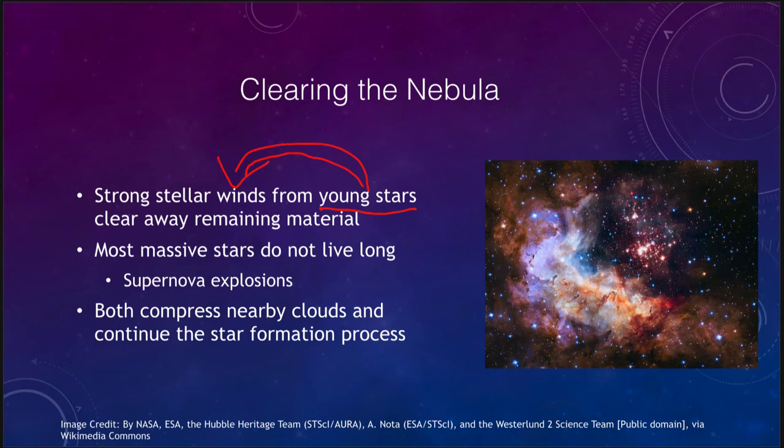Many of the massive stars do not live very long, only a few million years. They will undergo a supernova explosion where they implode as they build up iron in their core and then massively expand back out. Both of these serve to compress nearby clouds and continue the star-forming process.